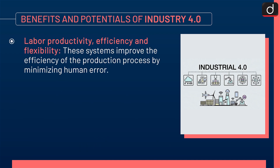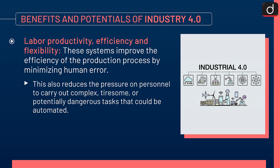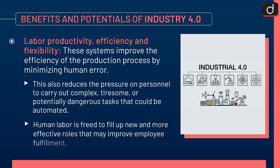Next is labor productivity, efficiency, and flexibility. These systems improve the efficiency of the production process by minimizing human error. This also reduces the pressure on personnel to carry out complex, tiresome, or potentially dangerous tasks that could be automated. Human labor is freed to fill new and more effective roles that may improve employee fulfillment.